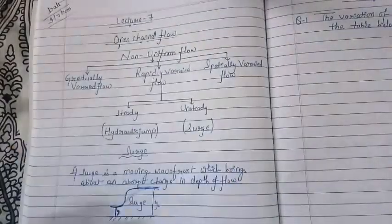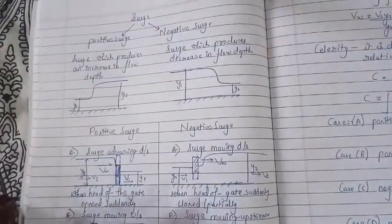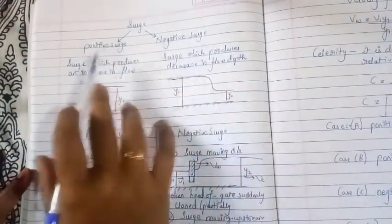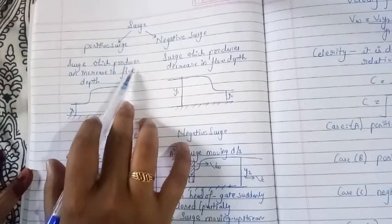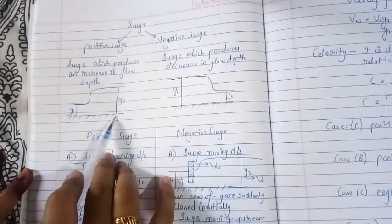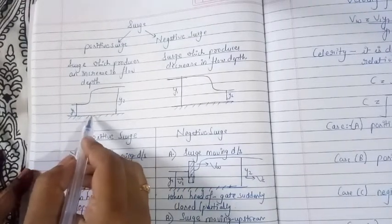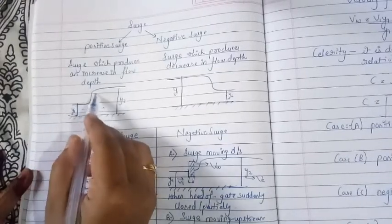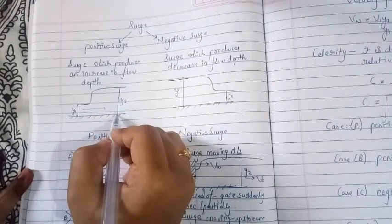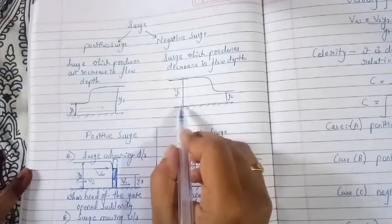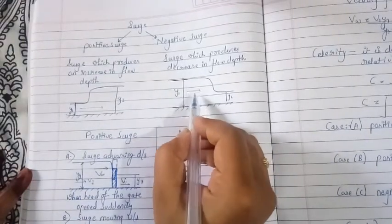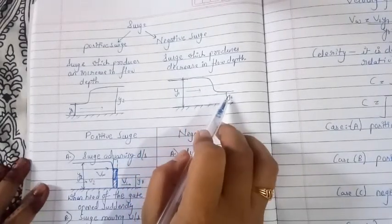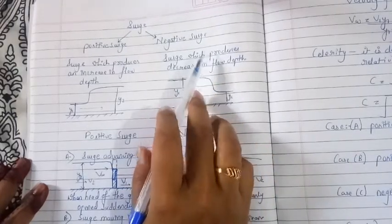Next we will see the different types of surge. Surge is categorized into two parts: positive surge and negative surge. A positive surge is one which produces an increase in the depth of flow — if the initial depth is y1 and it changes abruptly to y2 with an increase, that is a positive surge. If the depth y1 changes abruptly to y2 with a decrease in depth, that is known as the negative surge.